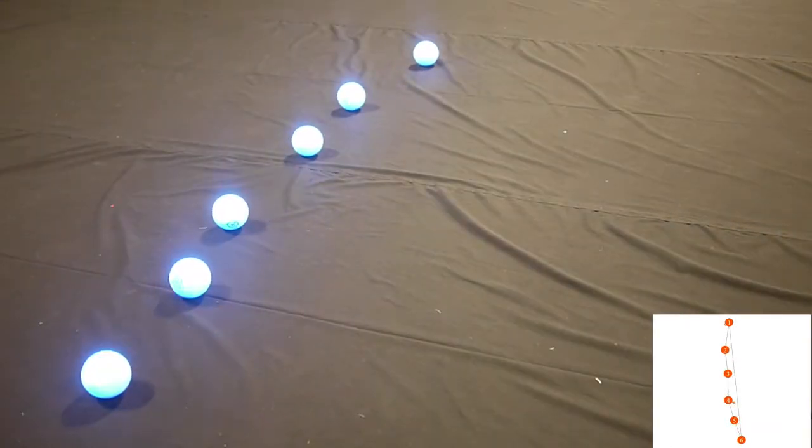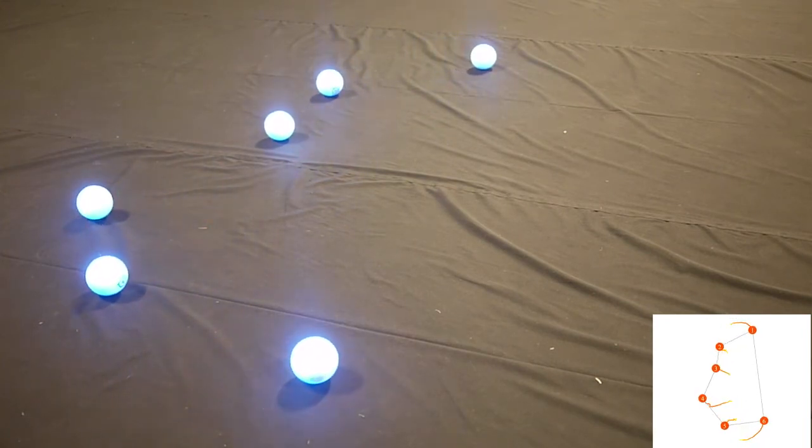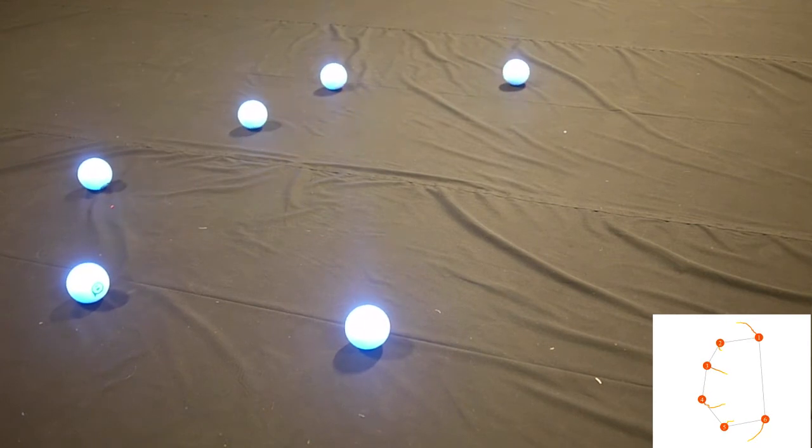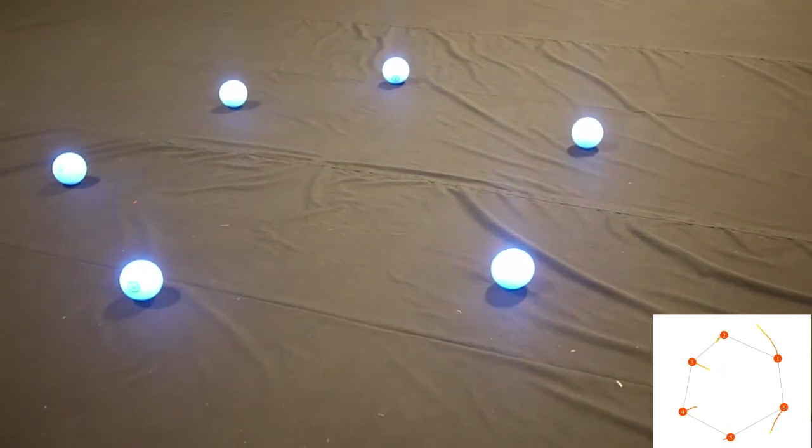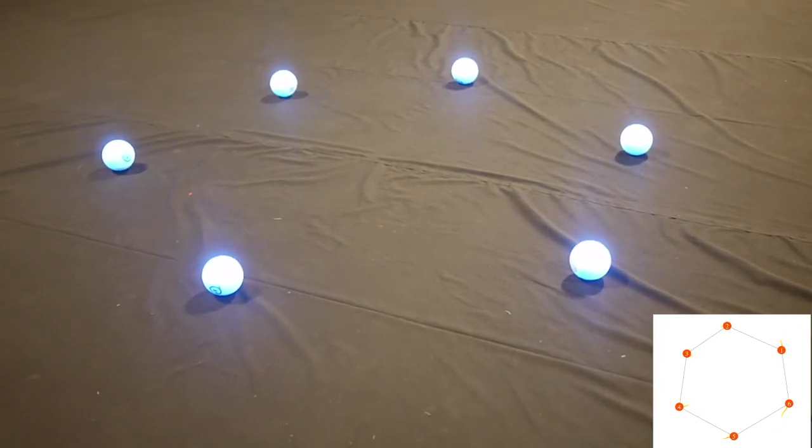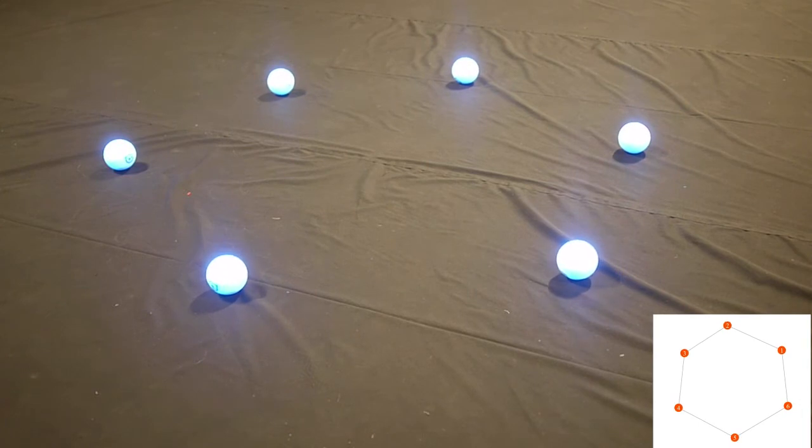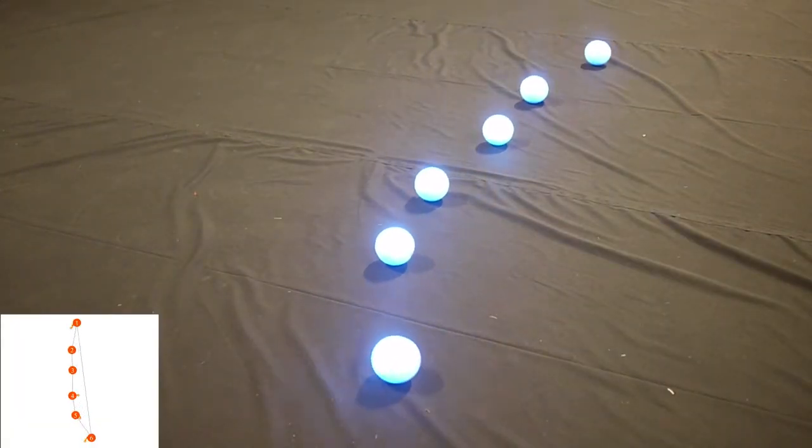In a new set of experiments with the desired formation defined as a hexagon, the robots achieve the desired formation under the single integrator control. The robots also achieve the desired formation using the unicycle control.